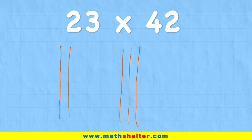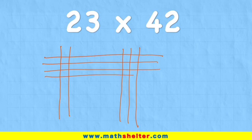And 42 could look like this: 1, 2, 3, 4, and then 2, 1, 2.